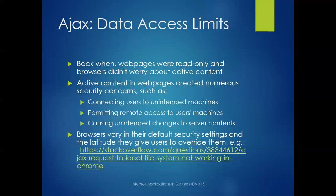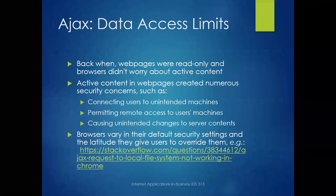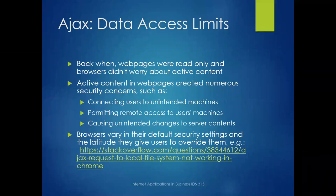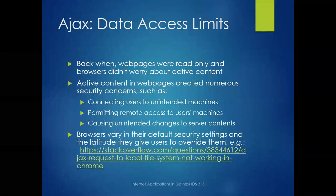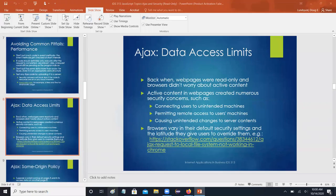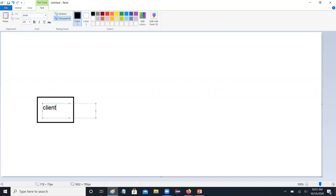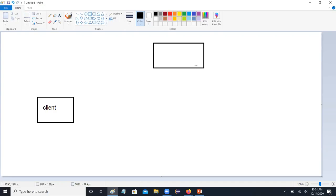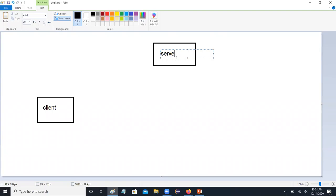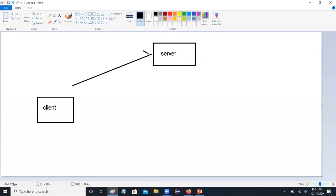These data access limits go back to the history of the web. Around 1990, web pages were read-only — you'd download a page and look at it. There were no security issues around active content because active content didn't exist. But once active content came along, you end up with the basic problem of verifying that the person trying to do things actually should be allowed to do them.